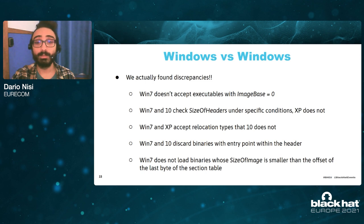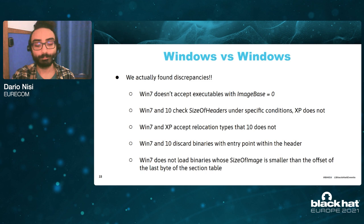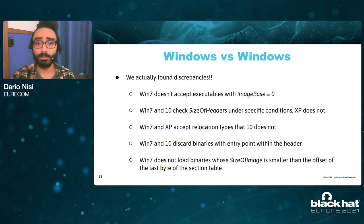Our tool found discrepancies even between different versions of Windows — we found five of them in particular. I'll just mention one briefly, which I like the most, and it's about the relocations. Basically, Windows XP and 7 allow executables to use any type of architecture-specific relocations, even if these are not actually supported by the architecture on which the program is about to run. For example, in Windows XP and 7, you can use MIPS-specific relocations even if you're running under Intel. Executables that do this are discarded by Windows 10 as invalid.